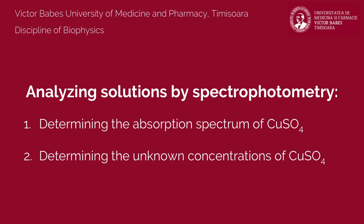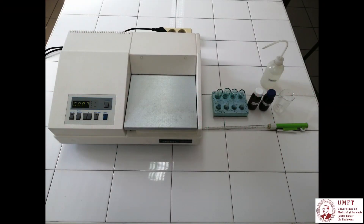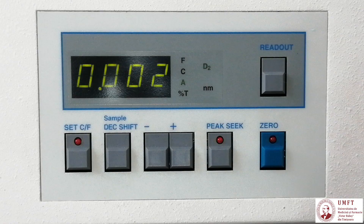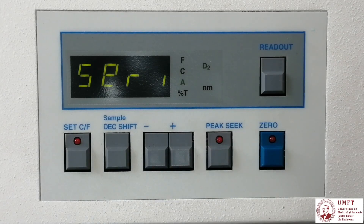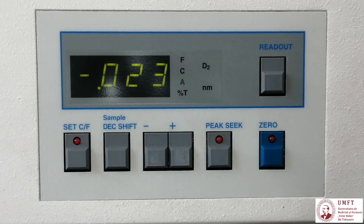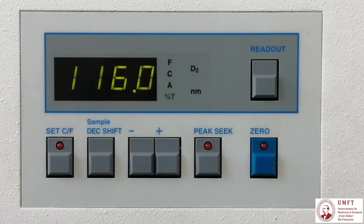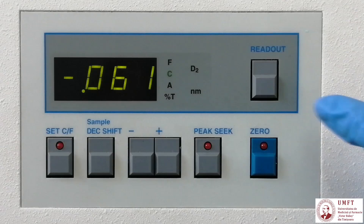In the first part of the experiment, you will obtain the absorption spectrum of copper sulfate within the 2% solution. For that, you will measure its absorbance in the 400 to 700 nm wavelength range. Since you will perform measurements only in the visible domain, it is recommended to turn off the deuterium lamp of the spectrophotometer to prolong its operation lifetime. Press the PIXIC button multiple times until the message DUTE appears on display, then press the SET button once. Using the readout button, set the spectrophotometer to work in the absorbance mode.